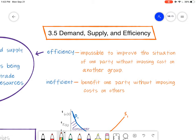Efficiency means impossible to improve the situation of one party without imposing costs on another group. So what does that mean? Well, it basically means that we're so efficient that we can't actually improve anything, so we can't produce more unless we take away from someone else or take away from another group.